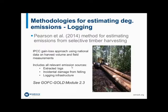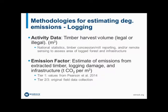The base of our approach was published a couple of years ago and is also covered in Goffsey Gold module 2.3. It takes an IPCC gain-loss approach using typically national data — could be local or even concession-specific data on harvest volumes — and then field measurements to come up with emission factors. It includes all relevant emission sources: the log extracted from the forest, the incidental damage, the top and stump remaining in the forest, and any emissions from logging infrastructure — building roads, skid trails, and logging decks.